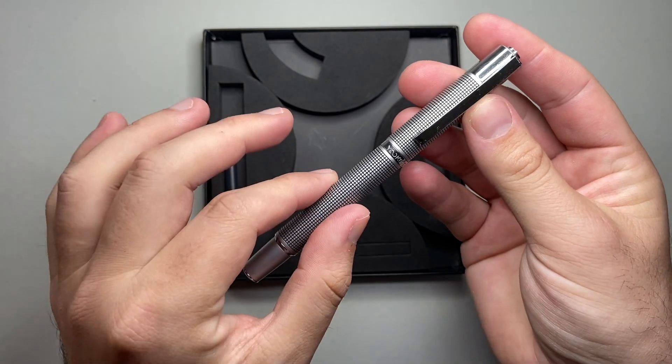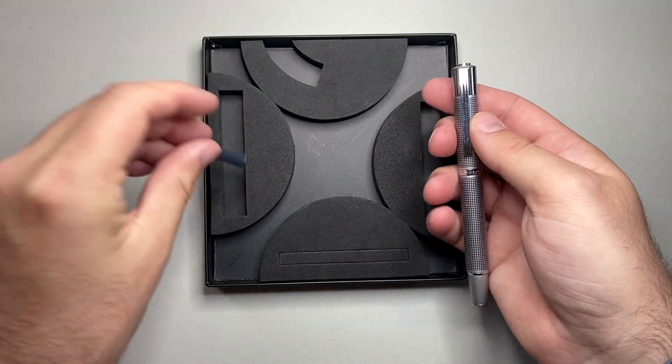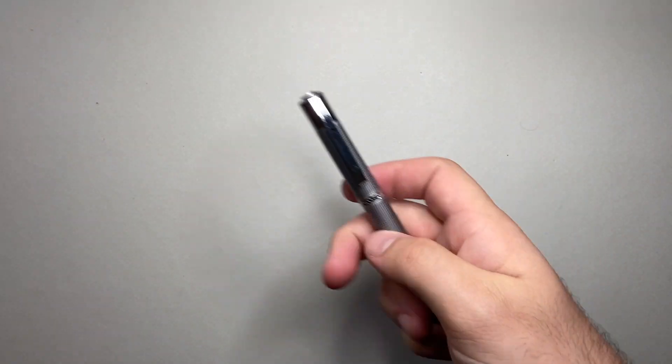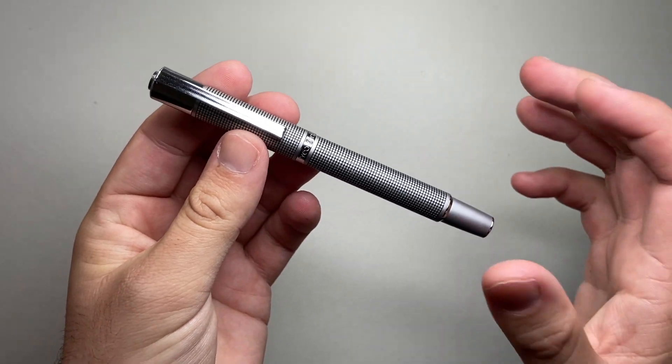So, felt tip pen. I'll just show this now because it comes with a cartridge. Felt tip pen that uses fountain pen ink, hence the cartridge.